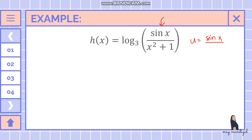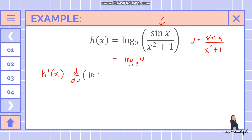This inner expression sine of x over x squared plus one will be our u. We rewrite the function as logarithm of u base three. Applying the chain rule, we take the derivative of the whole function — logarithm of u base three — which is one over u ln of three, then multiply by the derivative of the inner function.